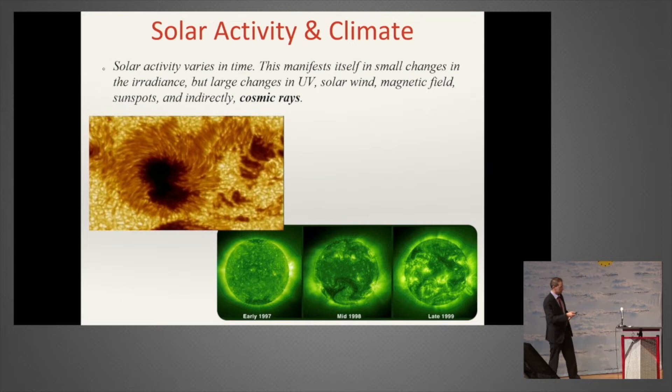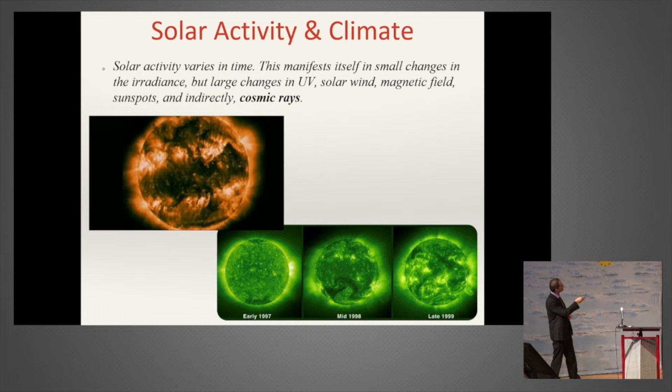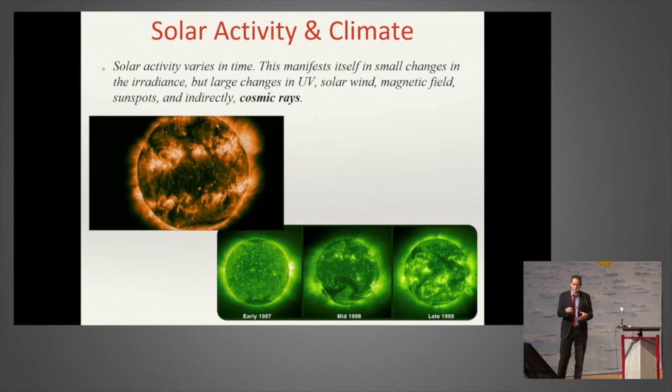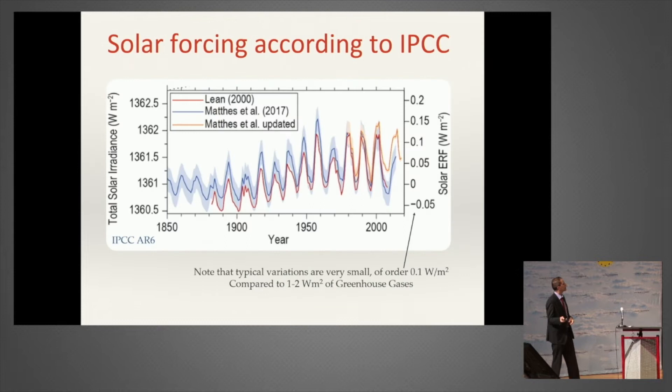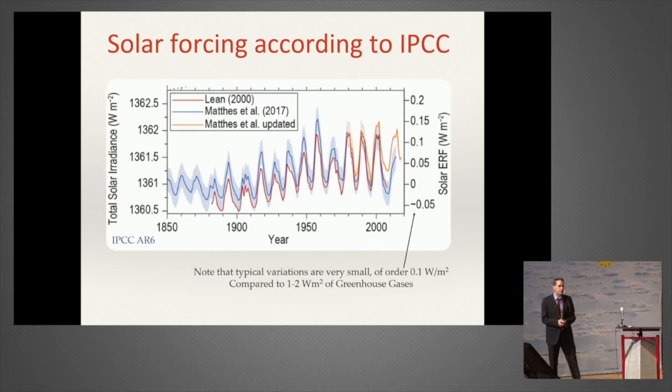The regions outside the sunspots look like a creamy soup—this is just the convection that Professor Happer was talking about, because the outer parts of the sun are convective like Earth. Before showing you that the sun has a large effect on climate, let's see what the IPCC tells us is the effect of the sun.